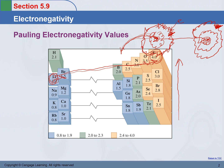Now let's consider elements from the same column — fluorine and chlorine, period two and period three. Fluorine has nine protons and nine electrons. Chlorine has 17 protons and 17 electrons. You might think: based on what we said, chlorine will be way more electronegative than fluorine, and the size of chlorine would be way smaller than fluorine.